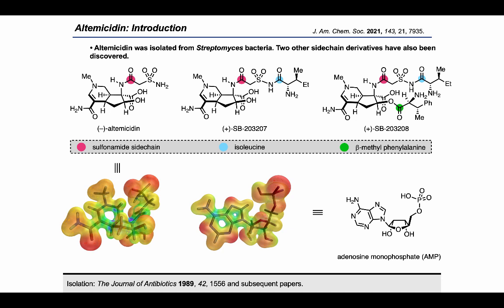The electrostatic potential maps of altemicidin and AMP further support our hypothesis that altemicidin may act as an AMP scaffold mimic. Examination of these structures reveals how the unusual sulfonamide side chain may mimic the AMP phosphonate and how altemicidin's bicyclic ring geometry adequately positions several polar atoms to effectively mimic the electrostatic profile of adenosine monophosphate.